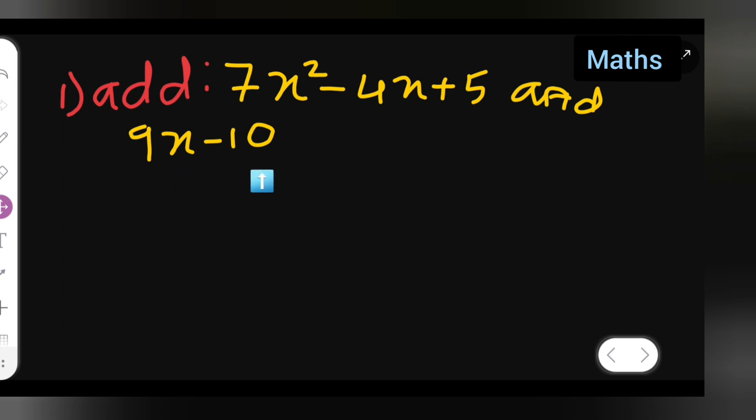Let's see how to add this. First, what I'll have to do is put 7x² - 4x + 5 as it is. So first I have written these terms as it is.